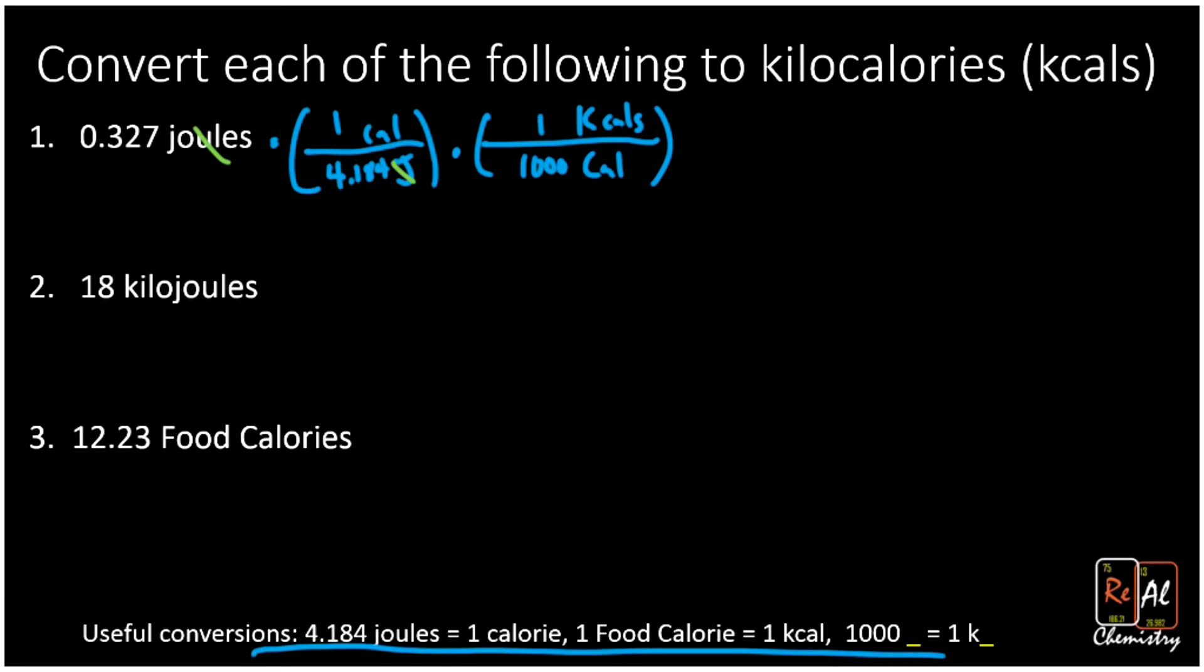So when we do that, we're going to get 7.8154 times 10 to the minus 5, so not many kilocalories. And then we need to round to sig figs. We had three sig figs going in, so we're going to need to round this to three sig figs. So that's going to round to 7.82 times 10 to the minus 5 kcals.